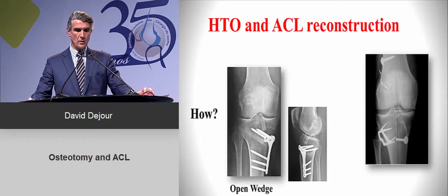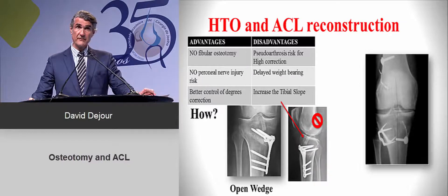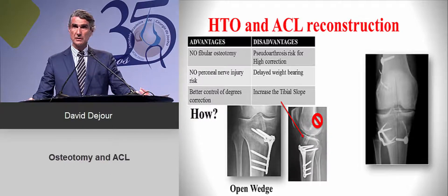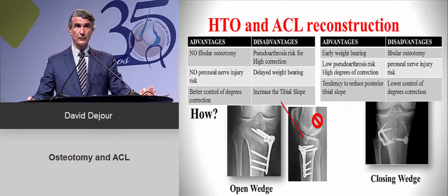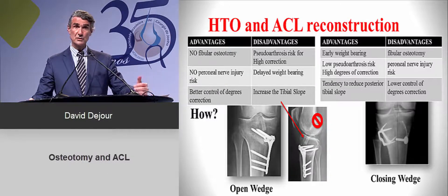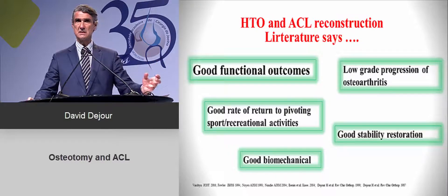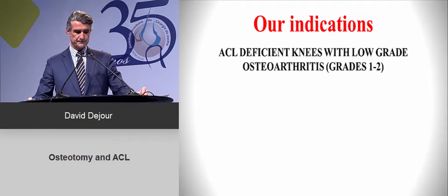When speaking about high tibial osteotomy, you can do an opening wedge osteotomy — no fibular osteotomy, no nerve risk, very precise — but there is a higher risk of malunion with large corrections, and be careful because you can increase the slope, which is definitely bad for your ACL. With a closing wedge osteotomy, there is slightly more nerve risk, but you can correct large deformities and reduce the tibial slope, which is important. The literature on ACL says yes — adding an HTO to your ACL is a good option.